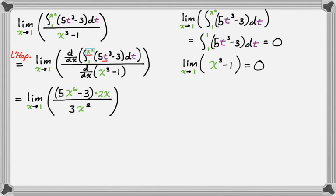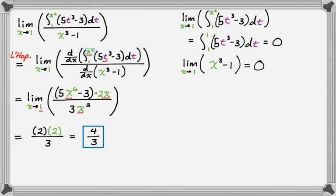Now I evaluate by direct substitution, replacing every x with 1. The numerator gives (5 times 1 minus 3) times 2, which is 2 times 2 = 4, and the denominator gives 3. So the answer is 4/3 with no additional simplification needed. Those are two good examples of limits that involve the Second Fundamental Theorem and L'Hôpital's rule. They're not super common, but when you see them they look a little scary — they're not bad though. Hope you found this helpful, and good luck!